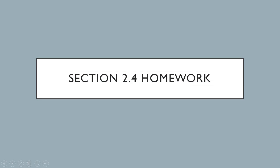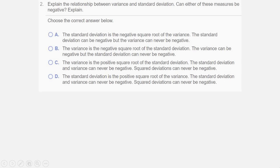We're looking at homework from section 2.4. This is question number 2. Explain the relationship between variance and standard deviation. Can either of these measurements be negative? Explain.